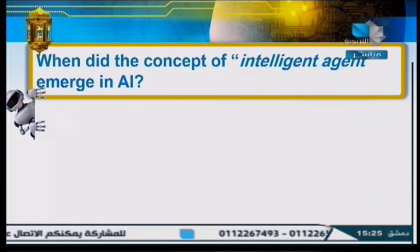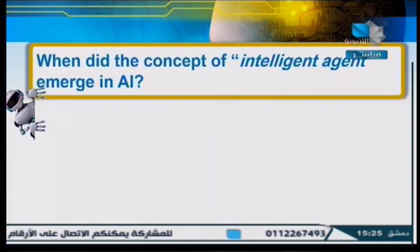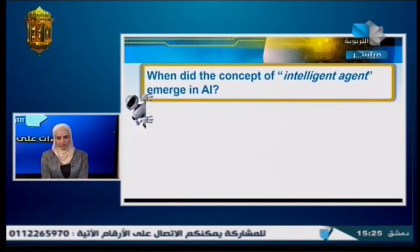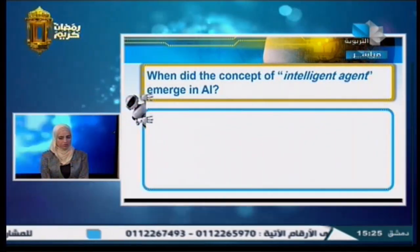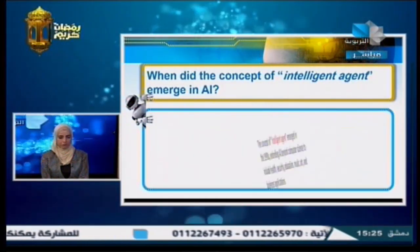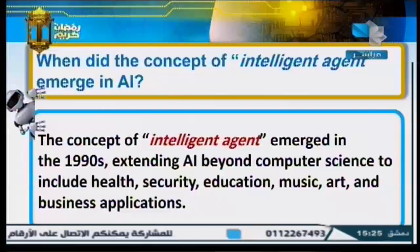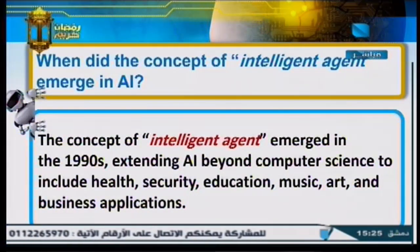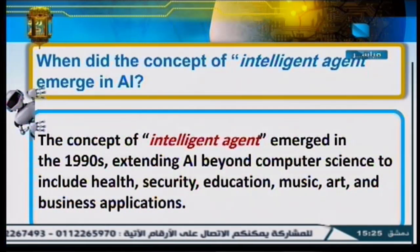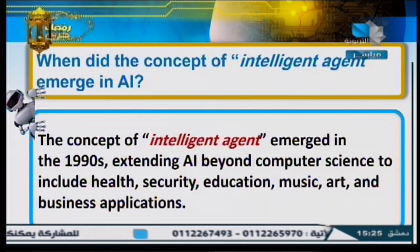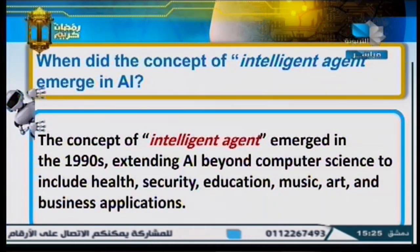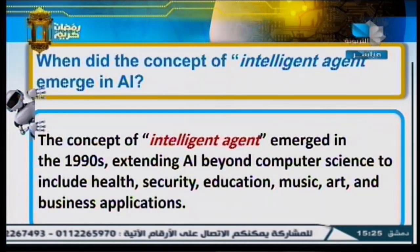When did the concept of intelligent agent emerge in AI? The concept of intelligent agent emerged in the 1990s. This emergence extended the application of AI beyond computer science to various fields including health, security, education, music, art, and business applications.